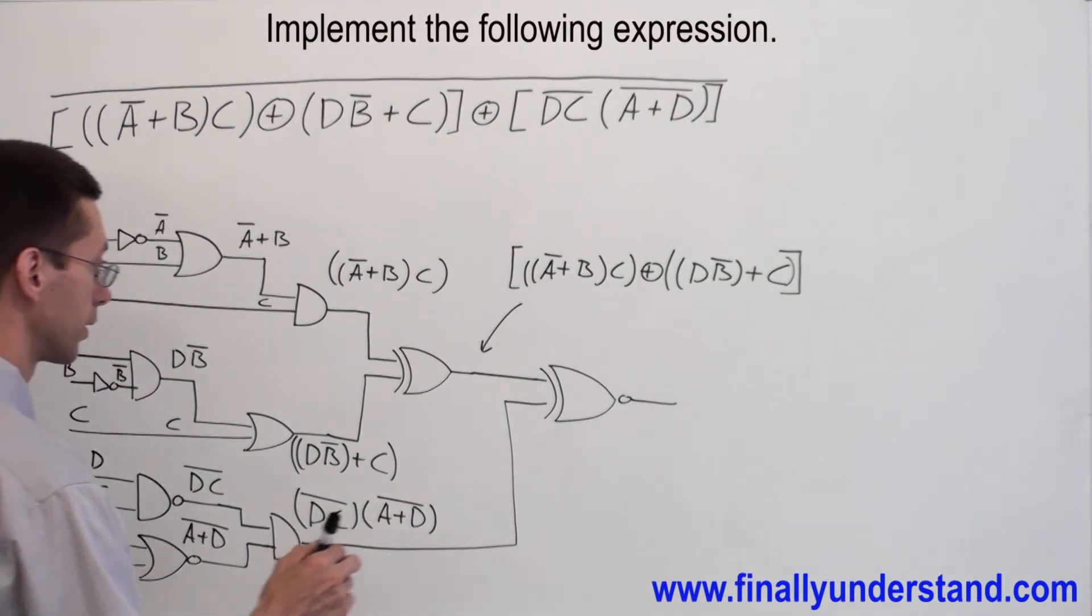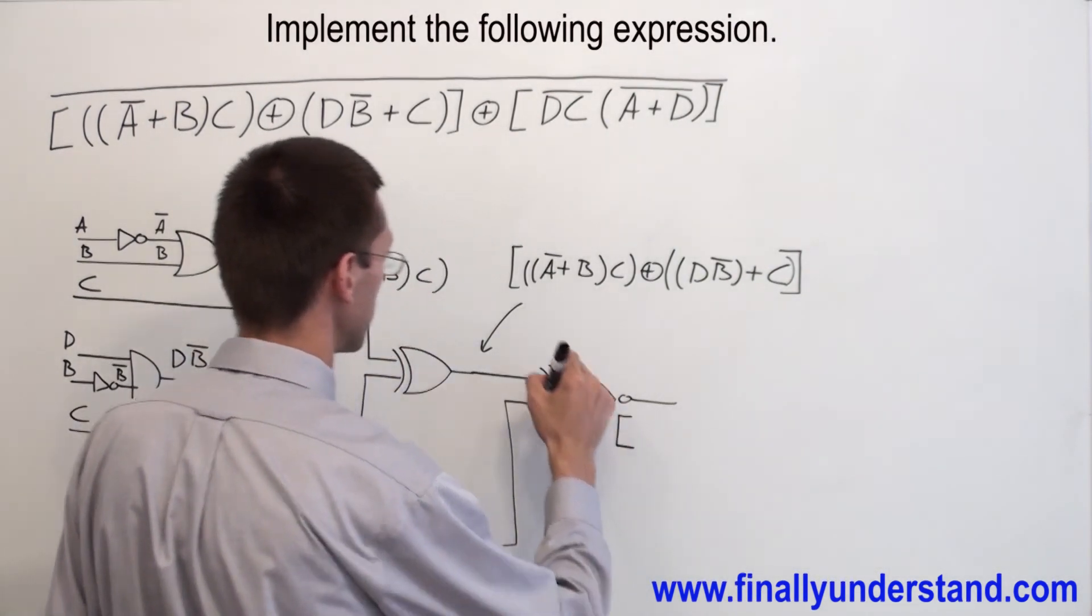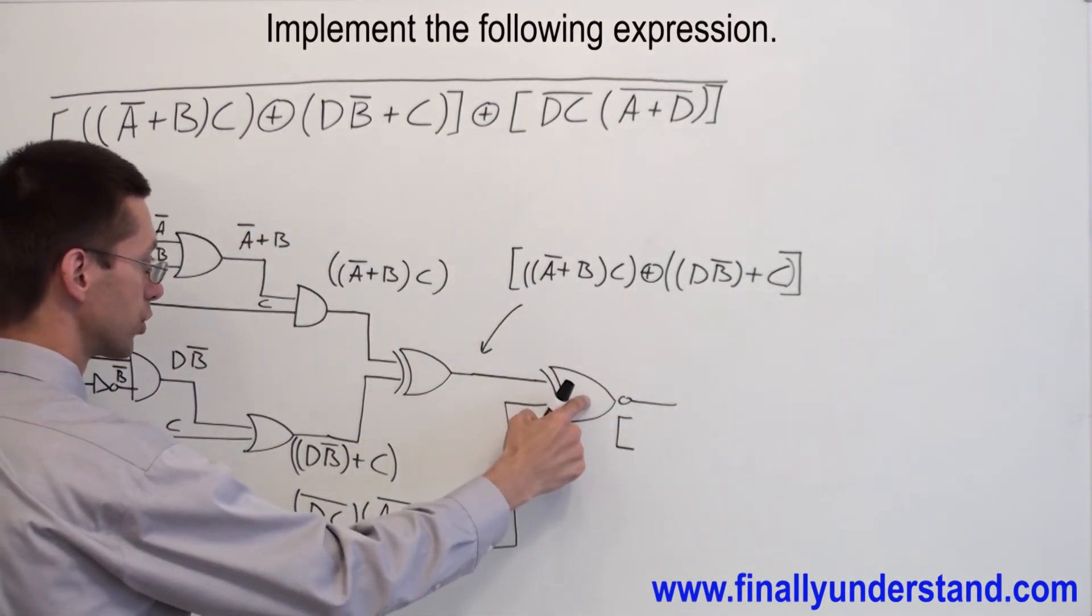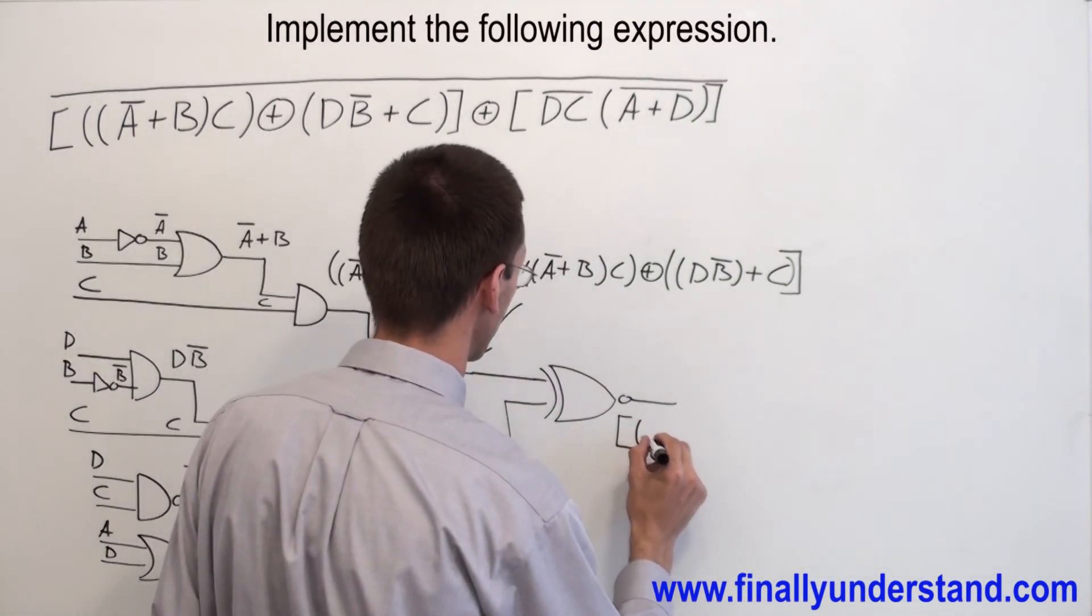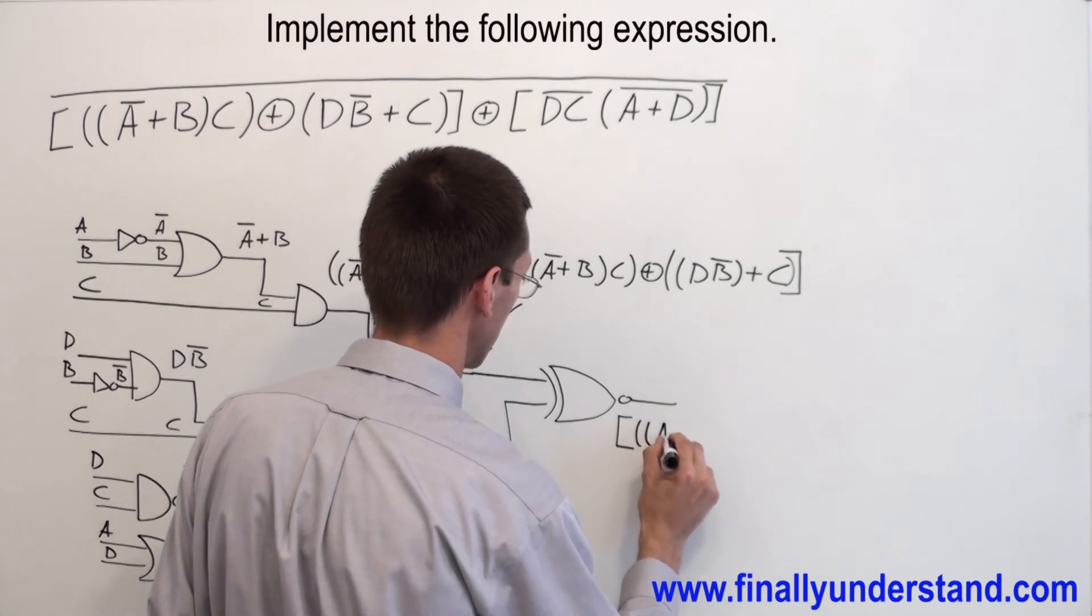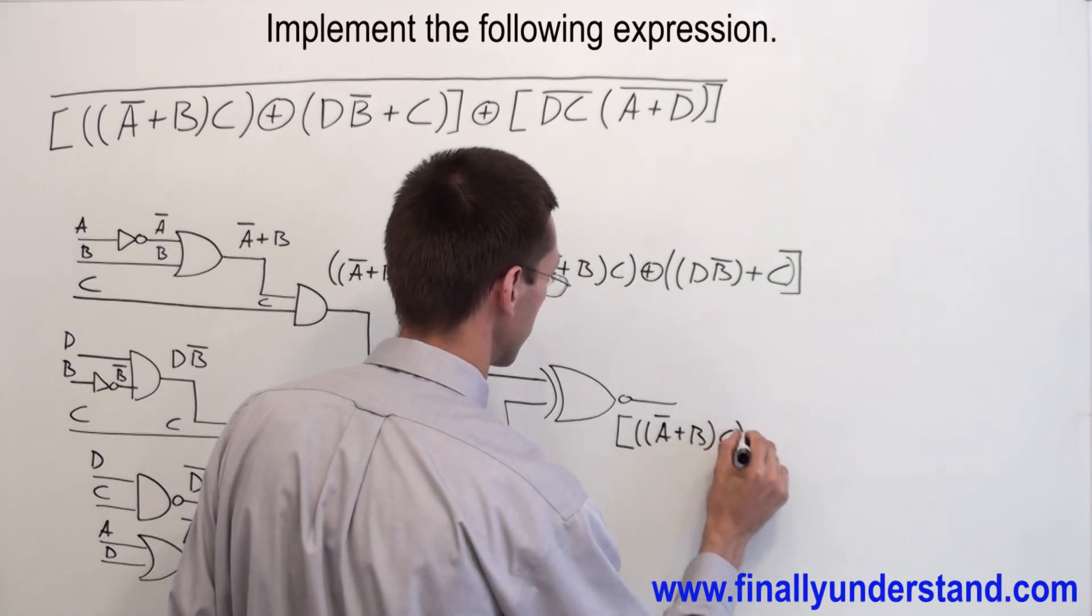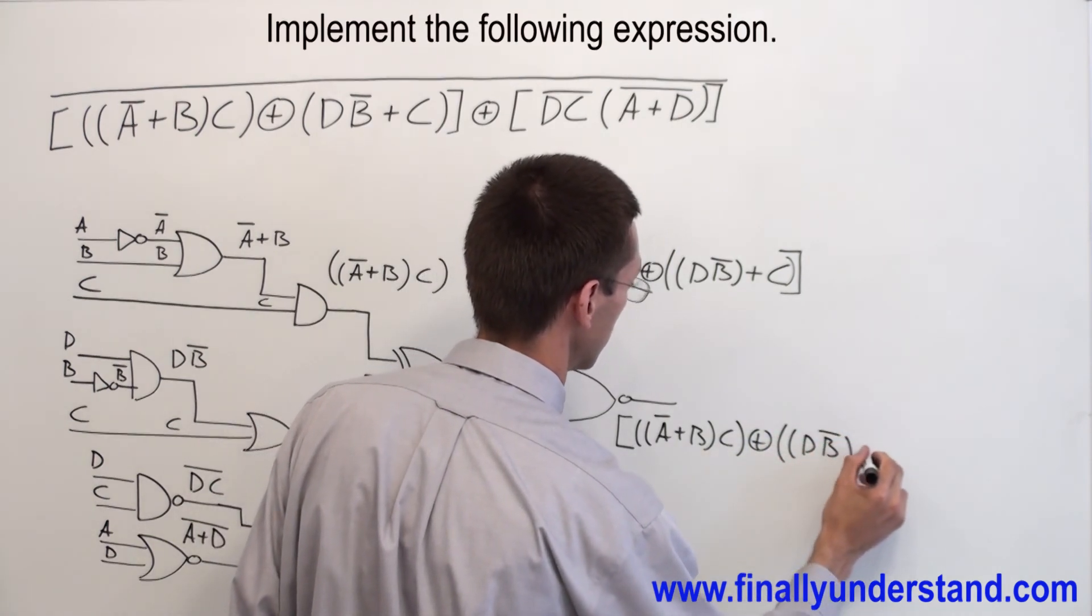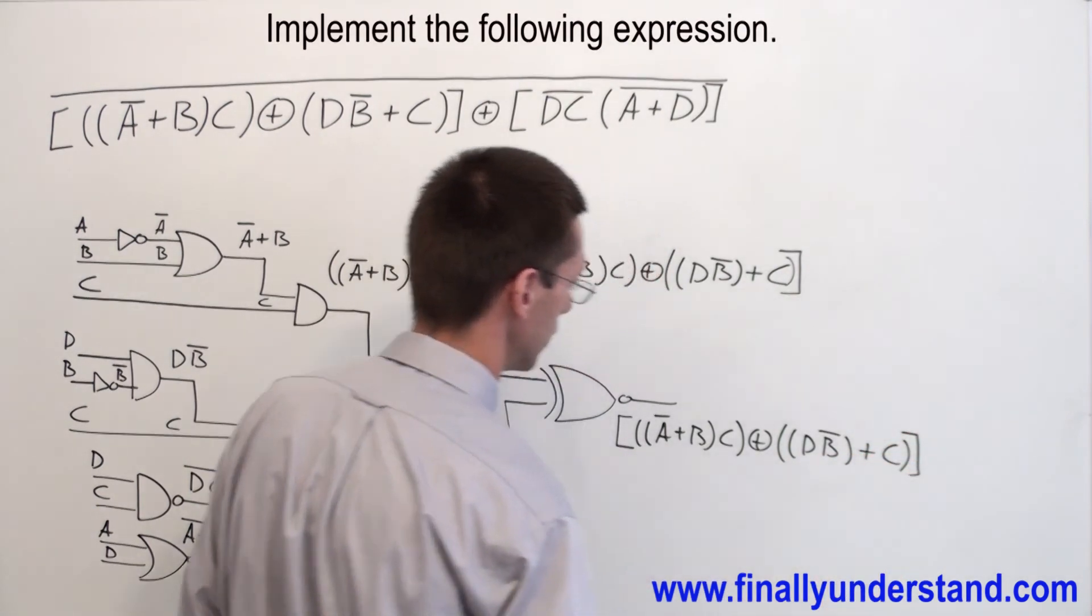Now I'm going to have the final answer looking like this. Simply, I have to copy whatever is on the first input, exclusively NORed with whatever is on the second input. So that's why I'm going to have open parenthesis, open parenthesis, A node OR B ANDed with C, exclusively ORed with D, B node OR C. Close brackets.